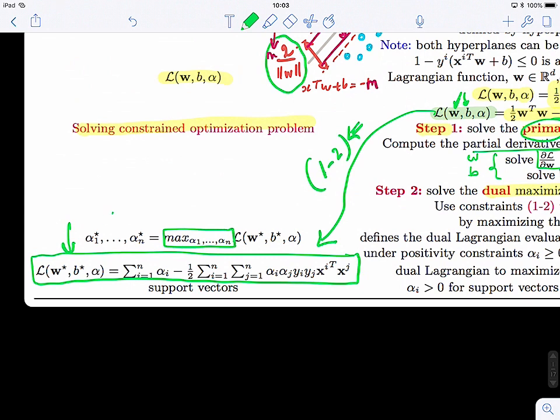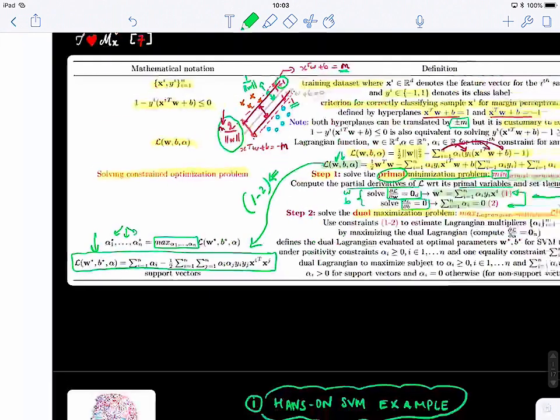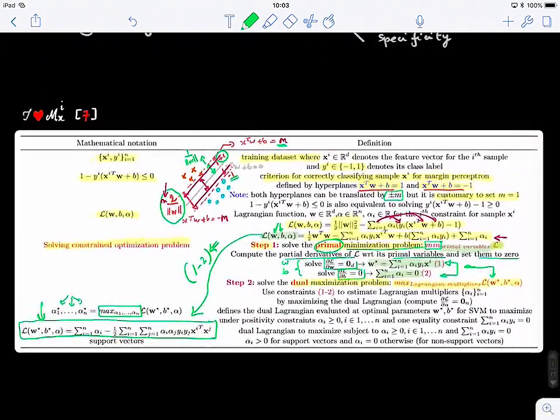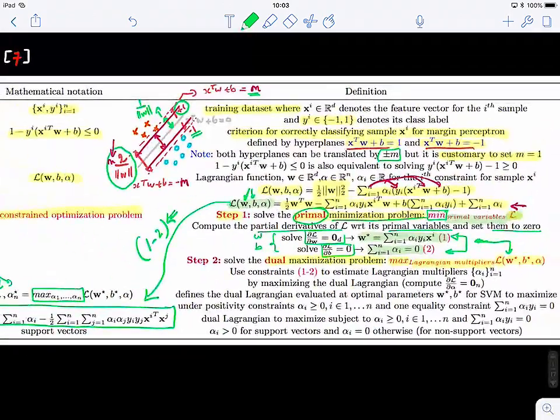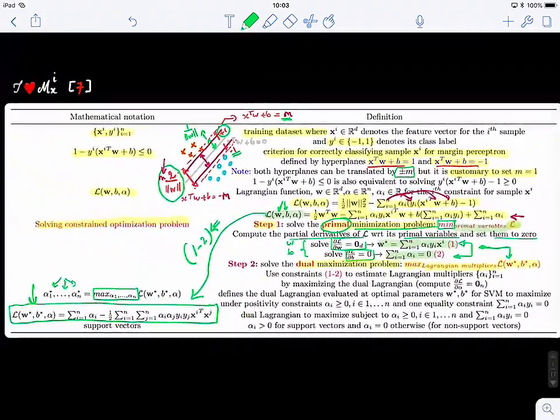And this will lead us to finding the optimal alpha stars that will lead to the perfect solution that we're looking for, like the optimal solution, one of the optimum. So they're not always unique. There isn't a unique solution.